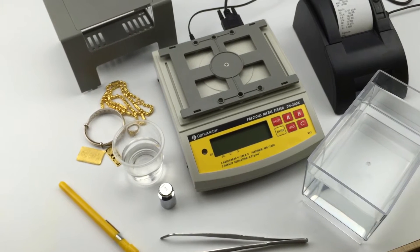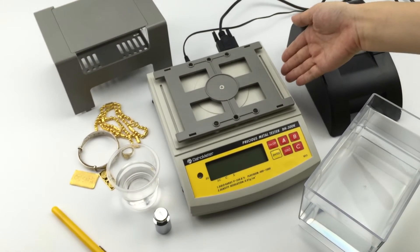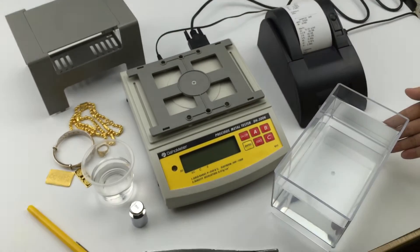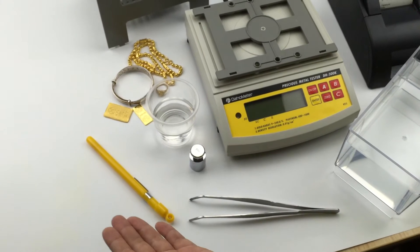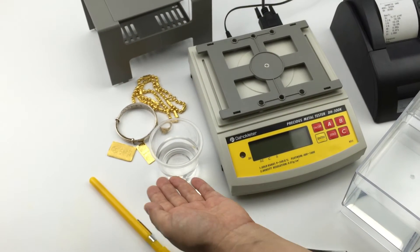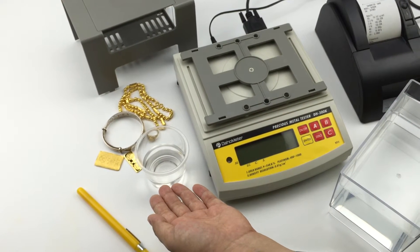Firstly, we will introduce you all the accessories. This is my host shelf, water tank, tweezers, thermometer, 100g weight and this is alcohol. We will use it later for clean samples.